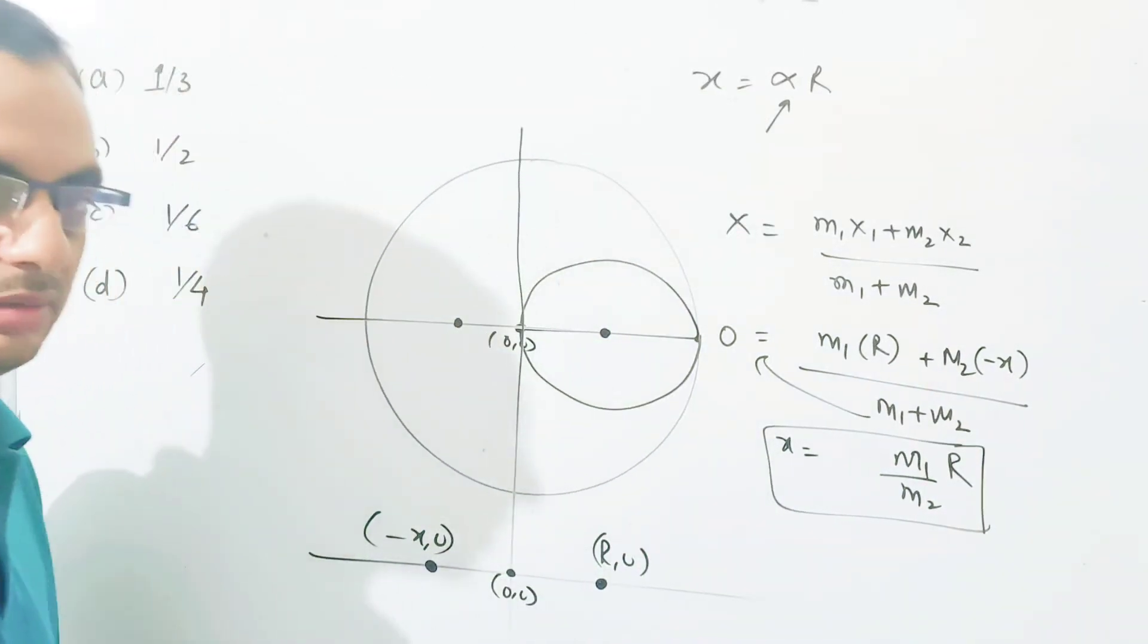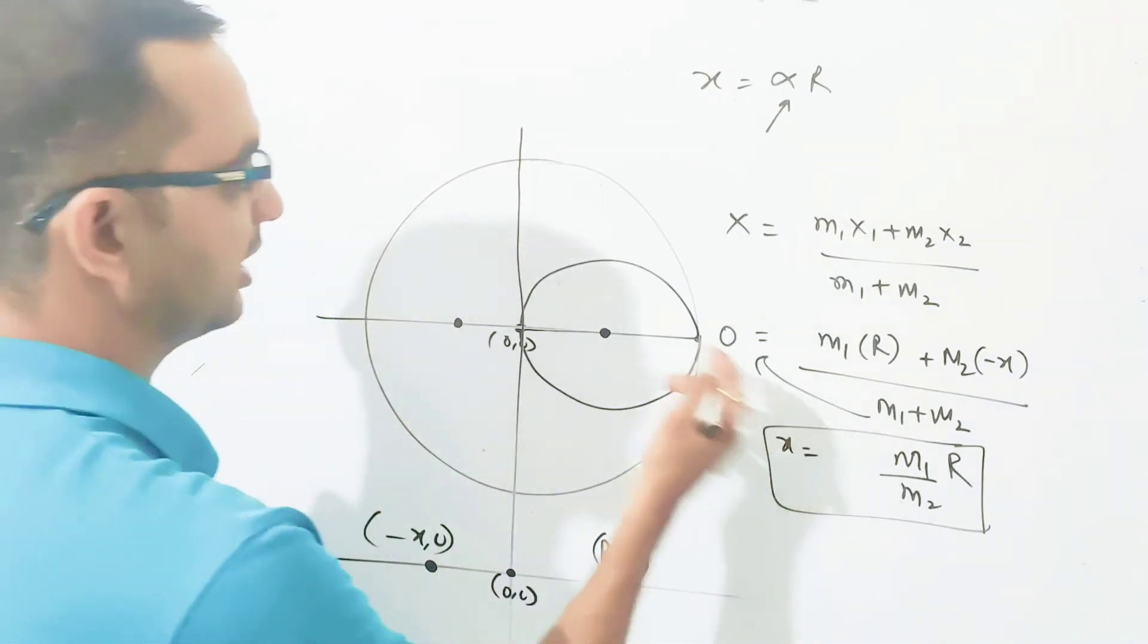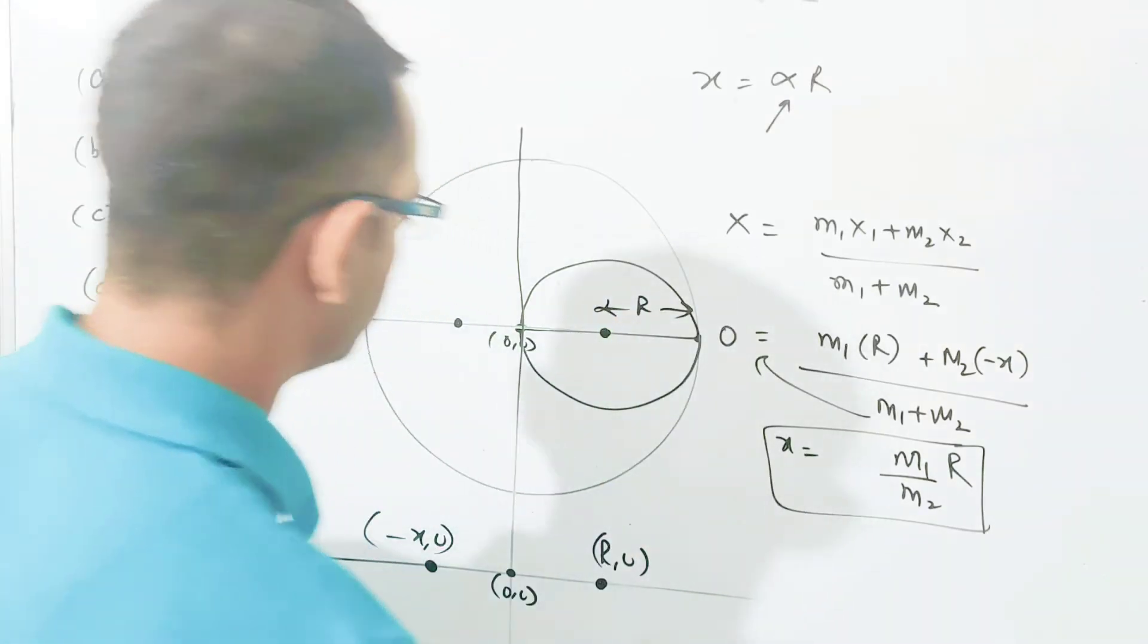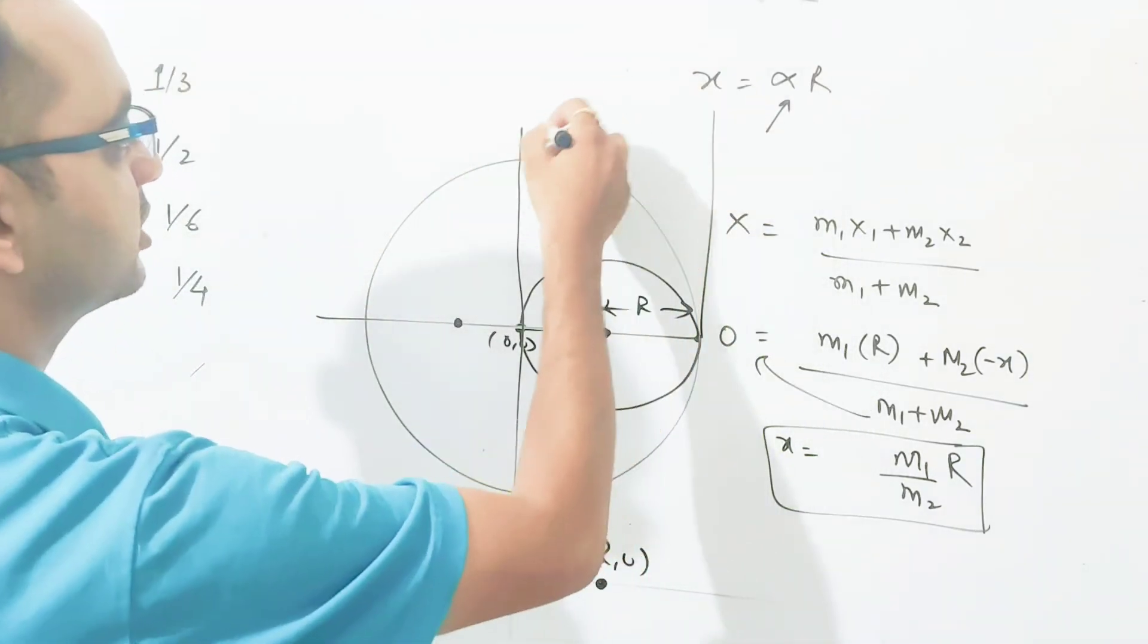That is the final answer: m1 by m2 times r. It's a simple way of finding m1 by m2. You can easily find the mass of the disc of radius 2R.